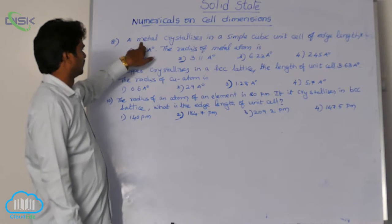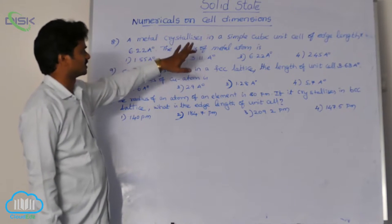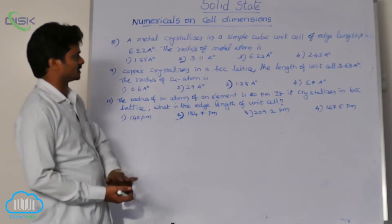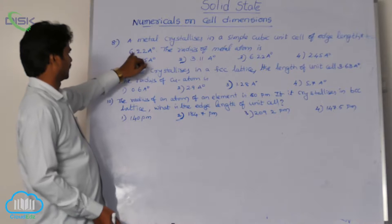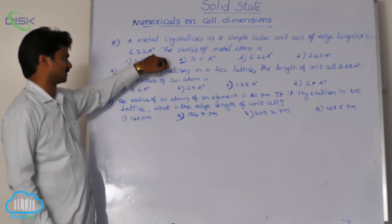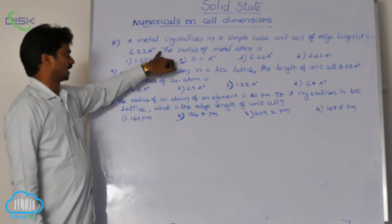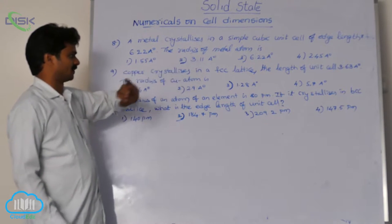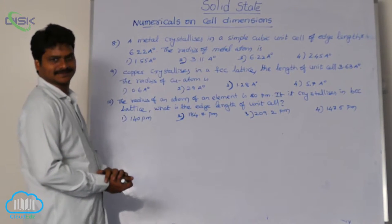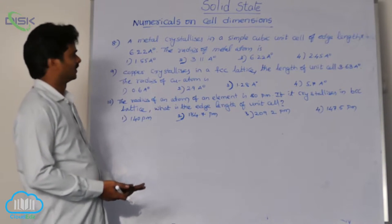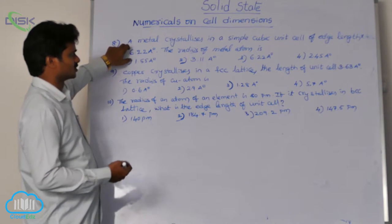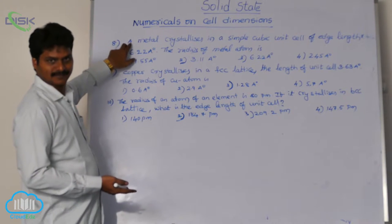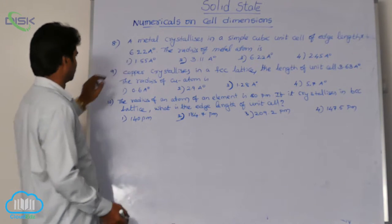A metal crystallizes in a simple cubic unit cell of edge length 6.22 angstrom units. The radius of the metal atom is to be found. The metal is crystallizing in simple cubic geometry.